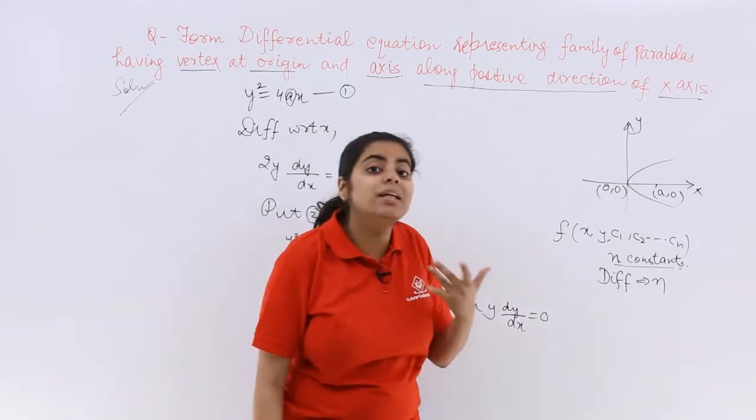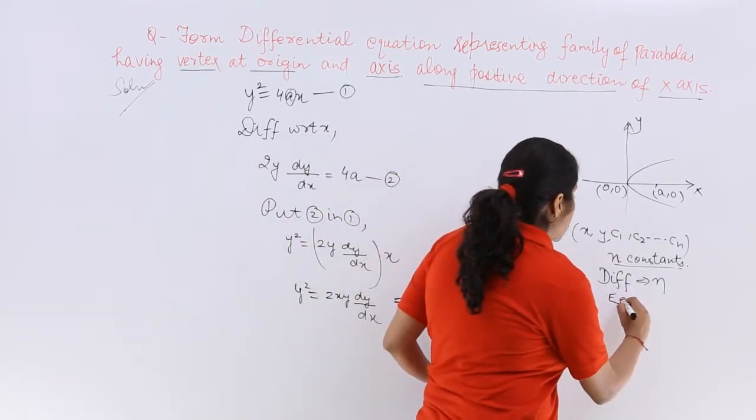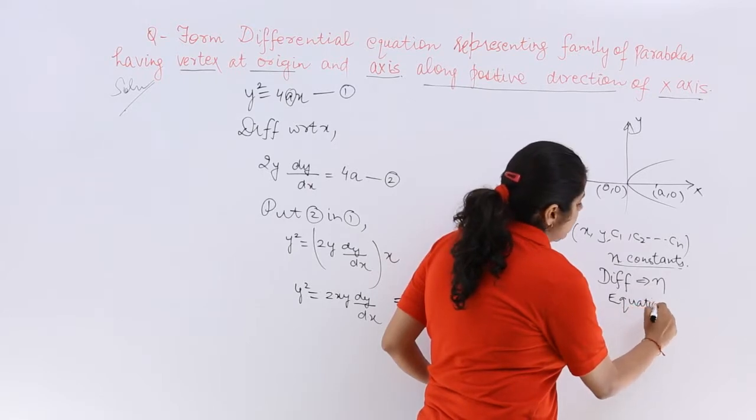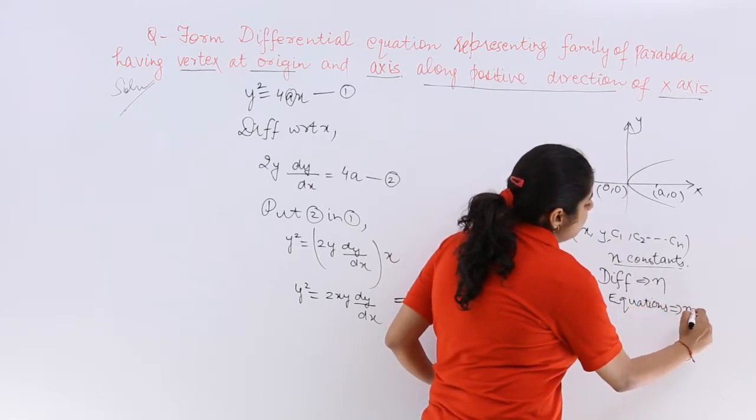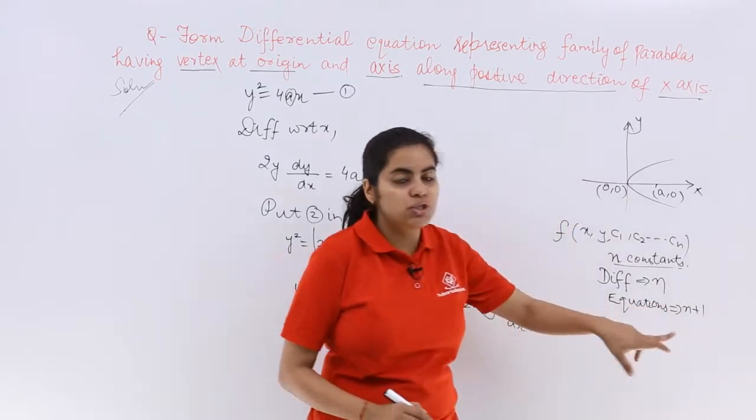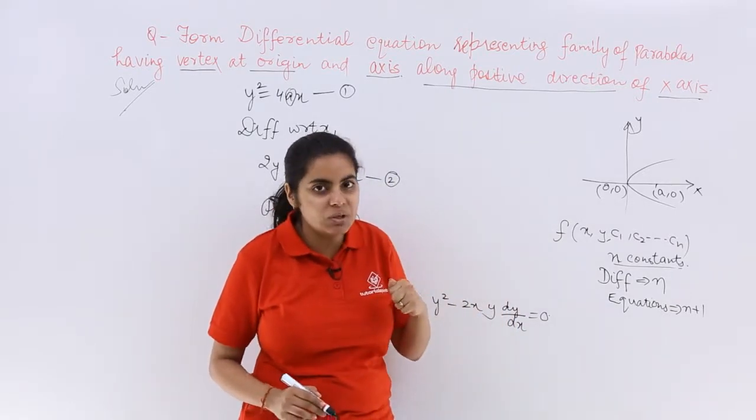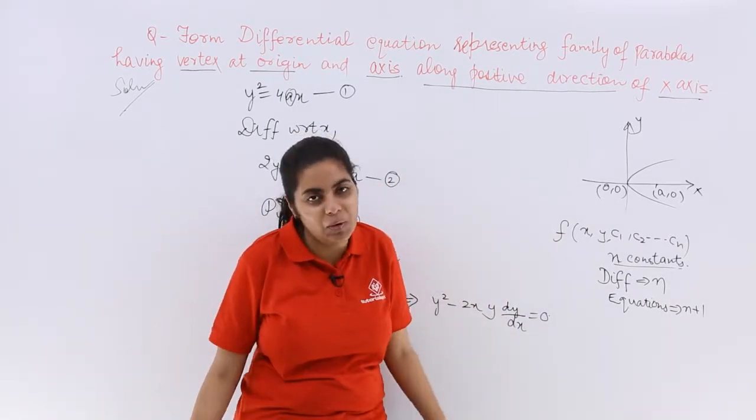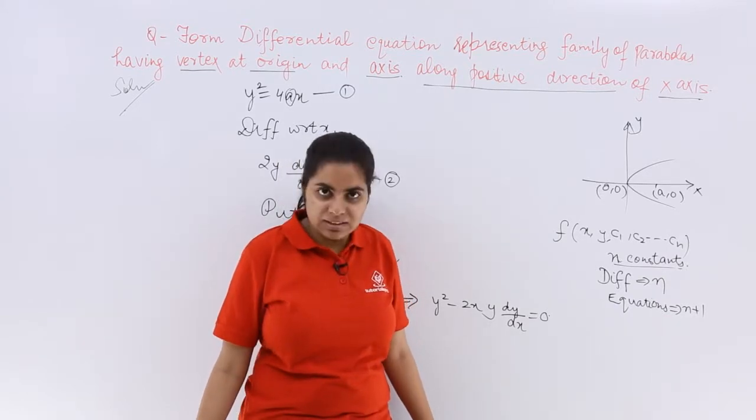The other thing, how many equations do we get? Along with the main equation, we get n plus 1 equations. So one extra we will get because one is the main equation and n equations are already there.